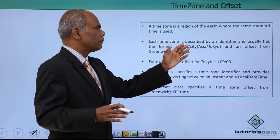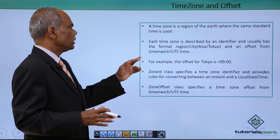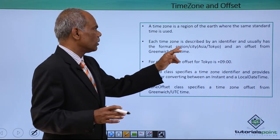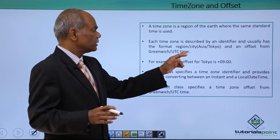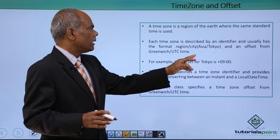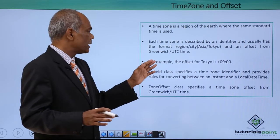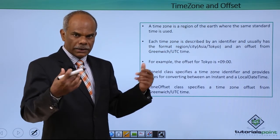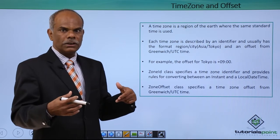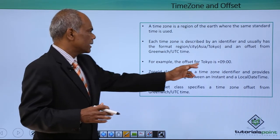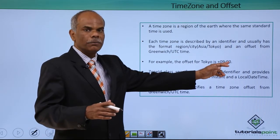Each time zone is described by an identifier, usually the identifier contains the name, the region or city, for example Asia Tokyo or Asia Kolkata, and an offset from the Greenwich Mean Time or UTC time. For example, the Indian standard time is having an offset 5 hours 30 minutes from the GMT. The Tokyo time is having an offset of plus 9 hours.